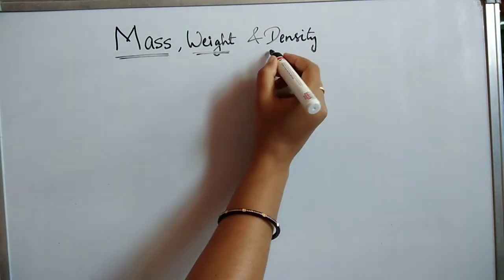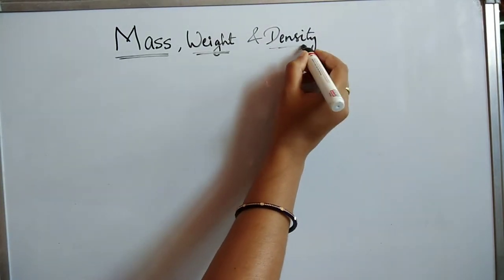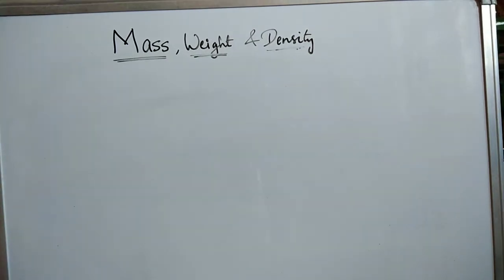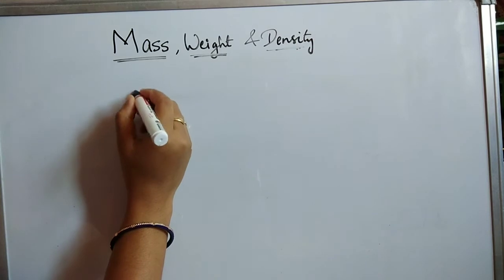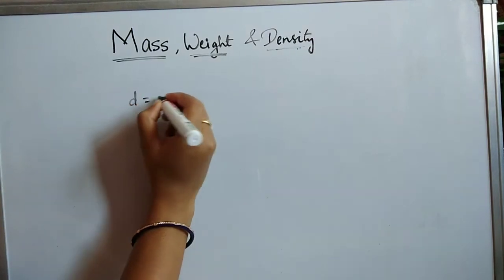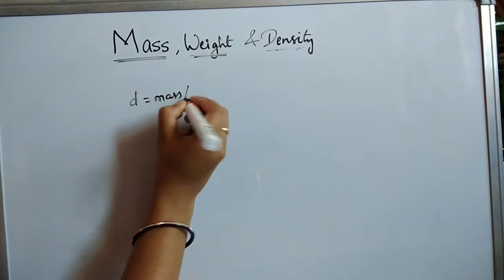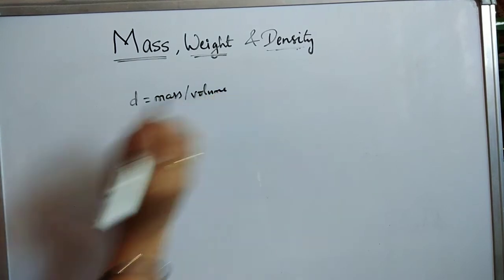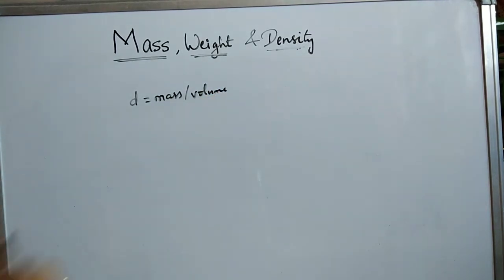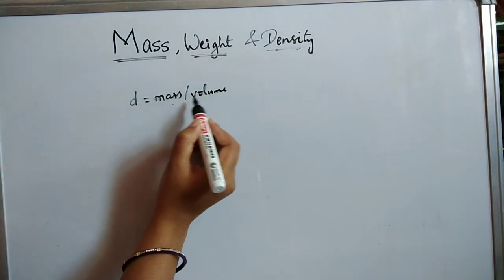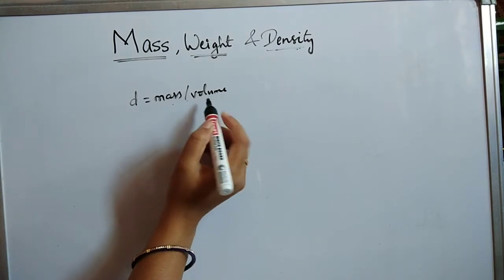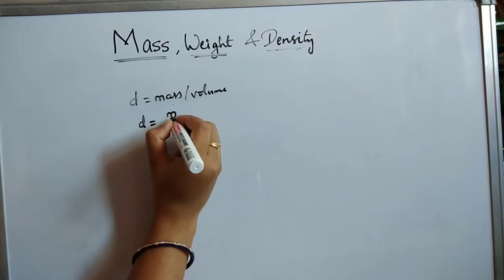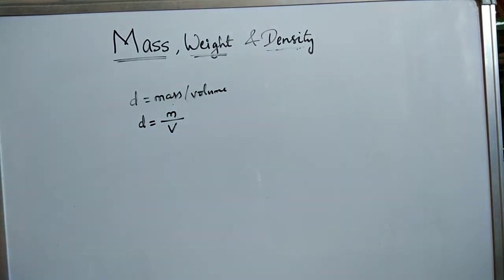Now we will see what is density. Density is defined as mass per unit volume of any substance. So density D is given by M divided by V: D = M/V.